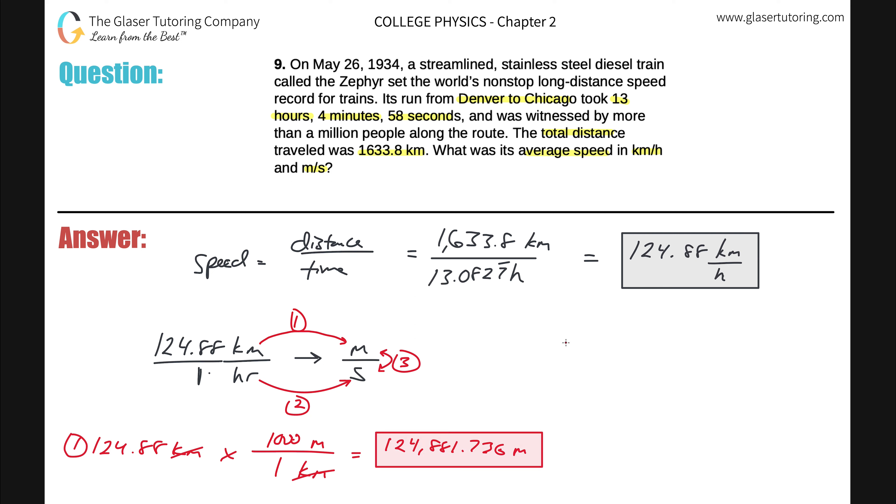Now step two is going to be to take the one hour and convert that into seconds. Now we already know how many seconds there are in an hour. Hour at the bottom, seconds on the top. For every one hour, there are 3600 seconds. So you can do that quickly now. Bada bing, bada boom. This is going to be 3600 seconds.